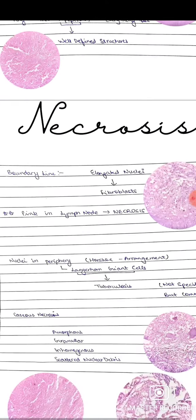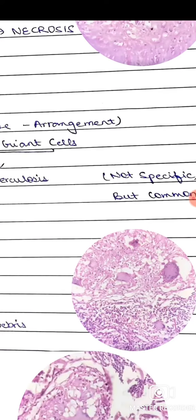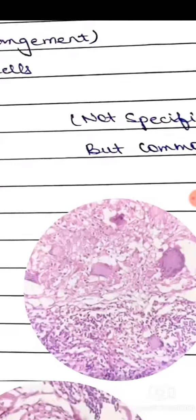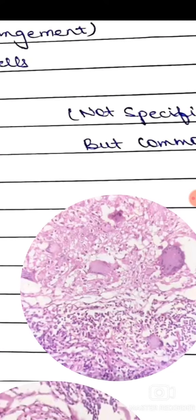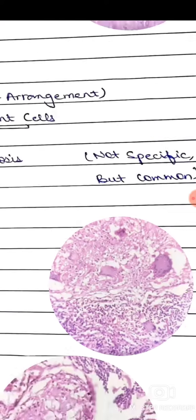After that, we see various large cells with nuclei in the periphery. These cells are called Langhans giant cells, and they are a characteristic feature of tuberculosis — not specific, but common.